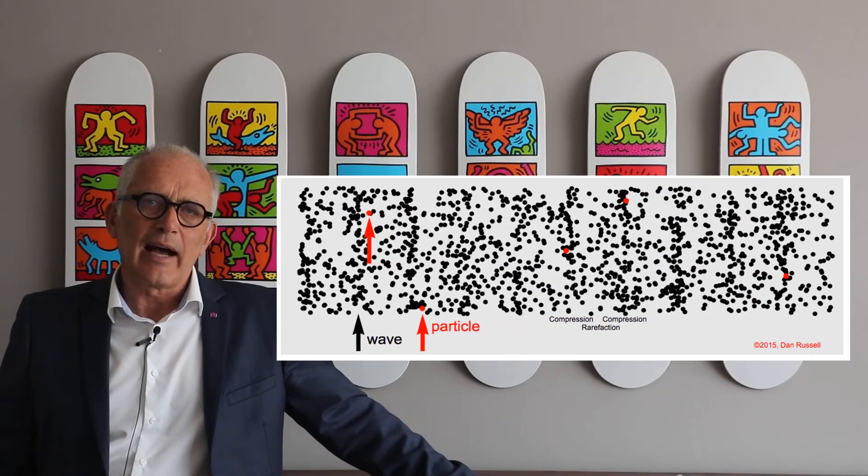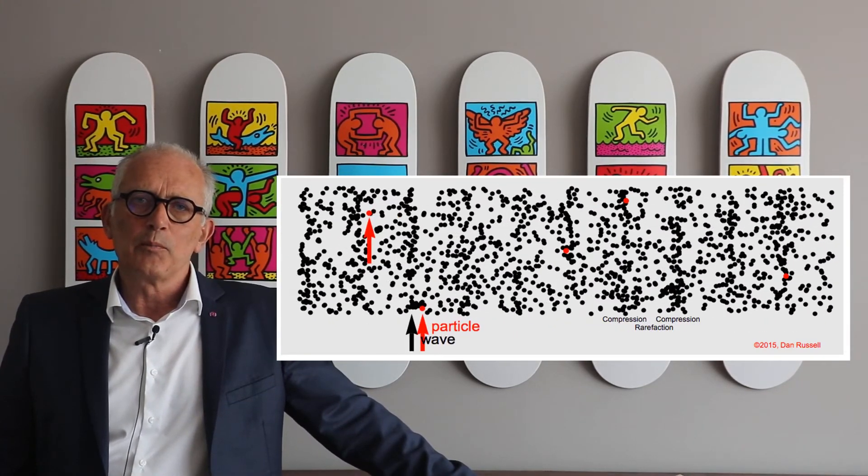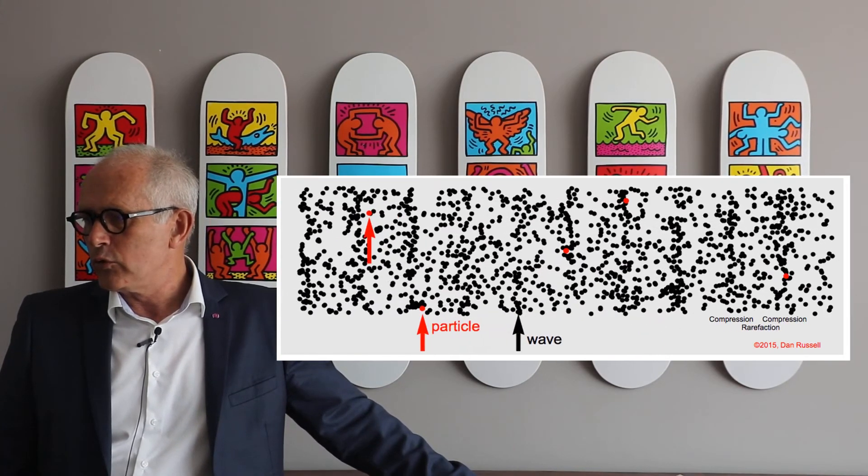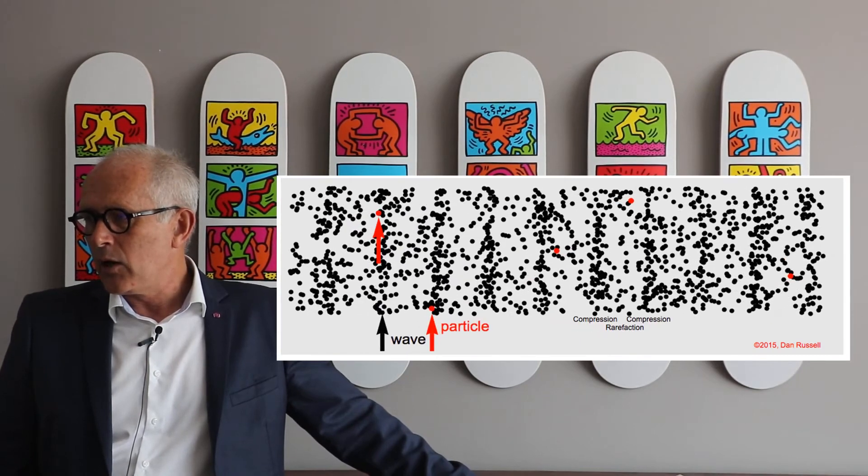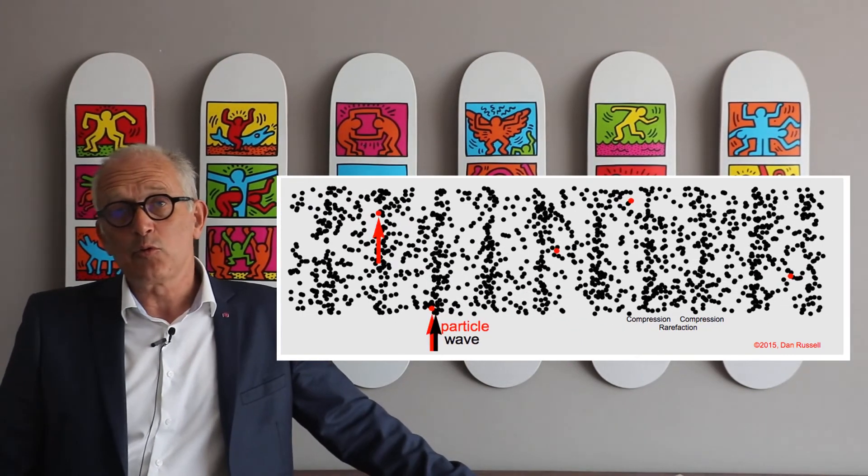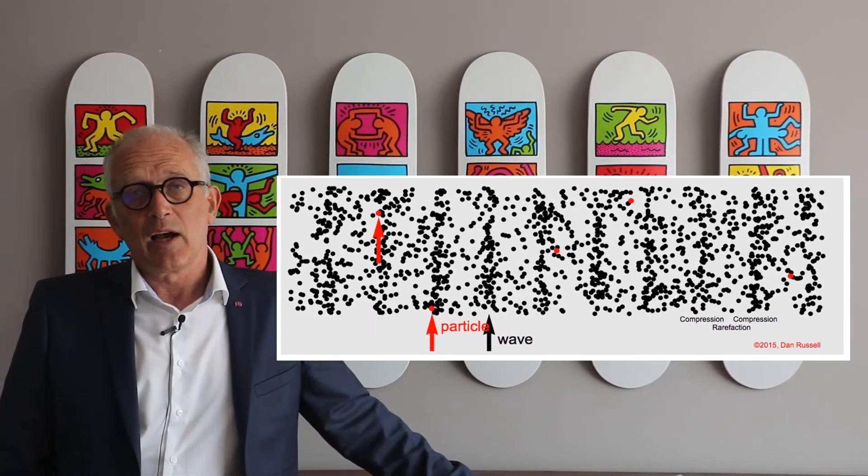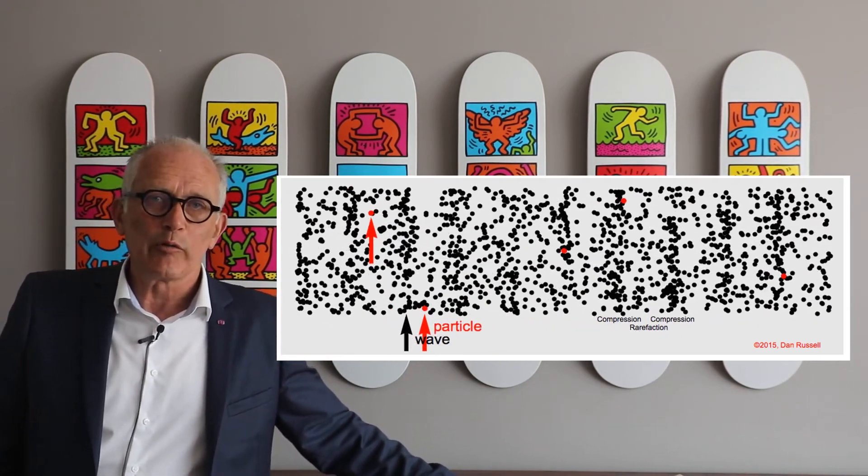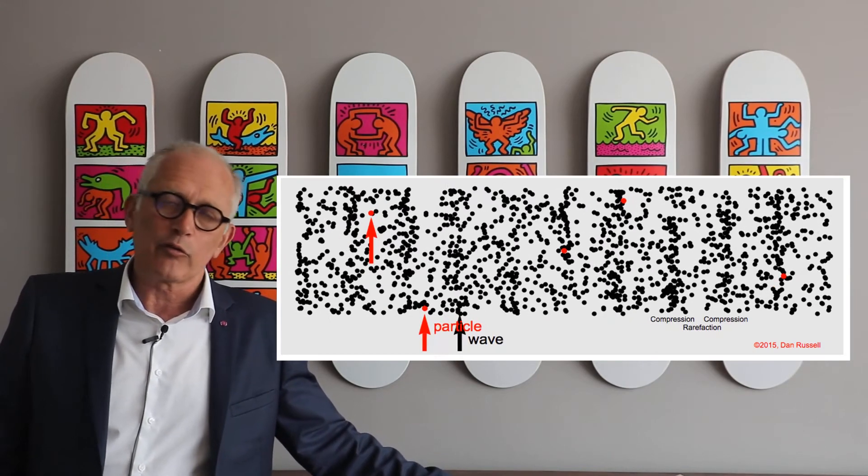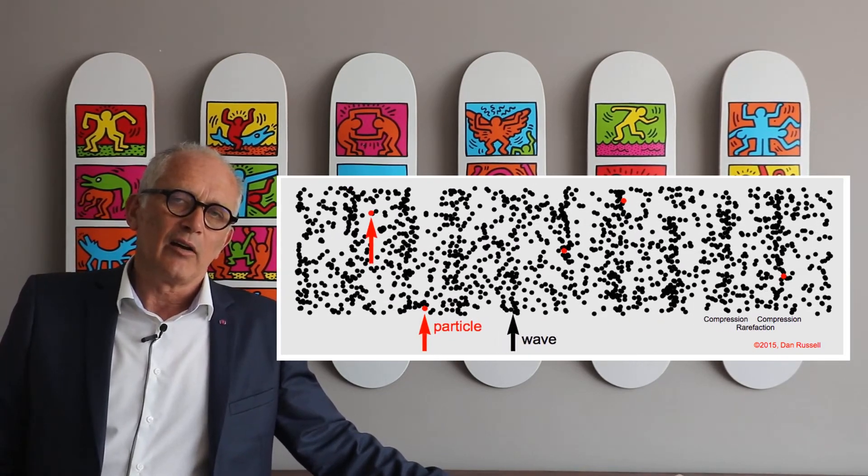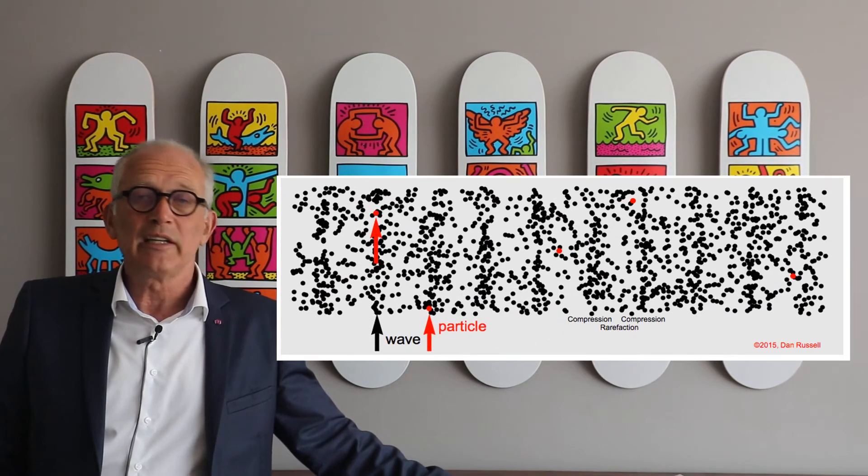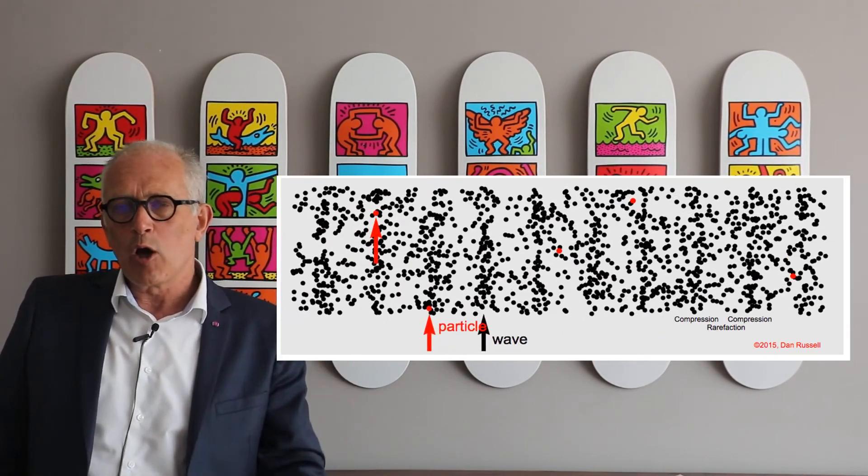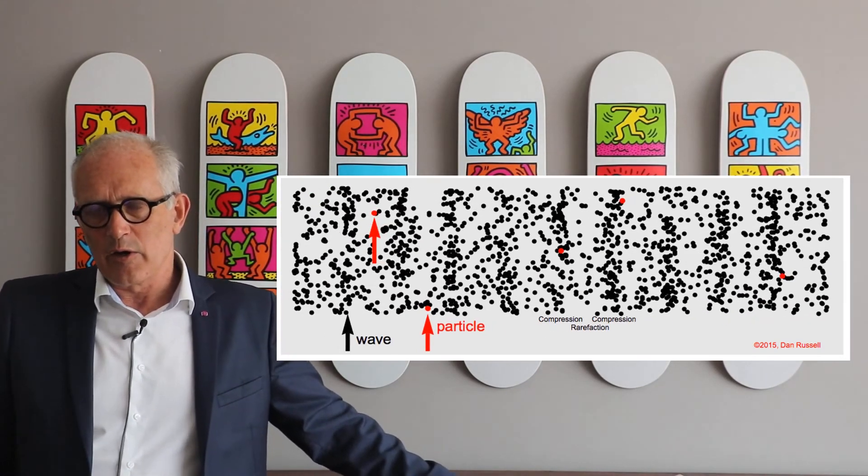If you look at this animation, you clearly see that. If you follow the black dots, something seems to be moving, which is the wave. But if you look at one individual molecule of air, the red one, for instance, you see that it is only moving back and forth locally, exactly like the person in the stadium moves up and down and then sits again.